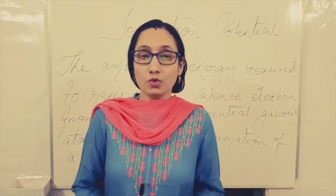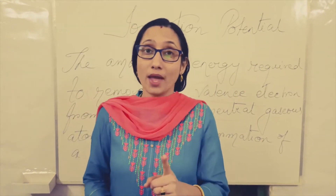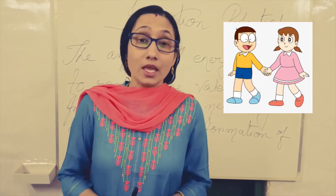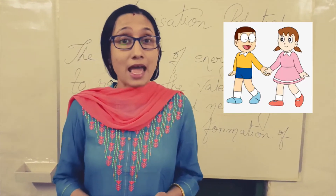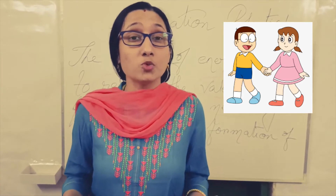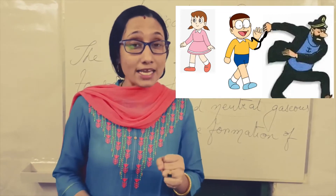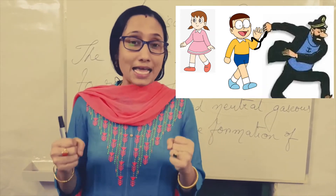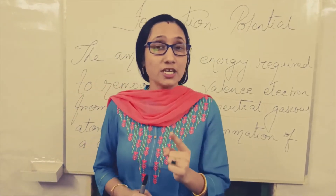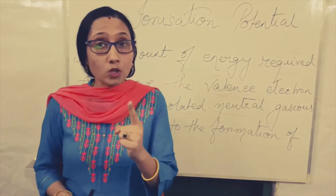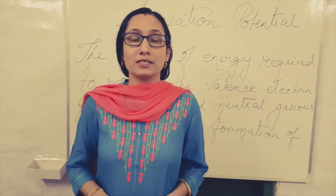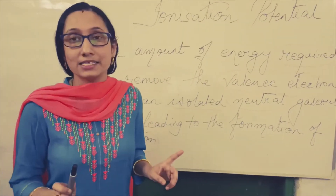Let me explain with one example why energy is required to remove the valence electron. When social distancing is the norm, if there are two friends who are attracted to one another and cannot maintain social distancing, parents or police will try to pull them apart, and for this some energy is required. Likewise, energy is required to pull the valence electron from the attractive influence of the nucleus, and this energy is termed as ionization potential.